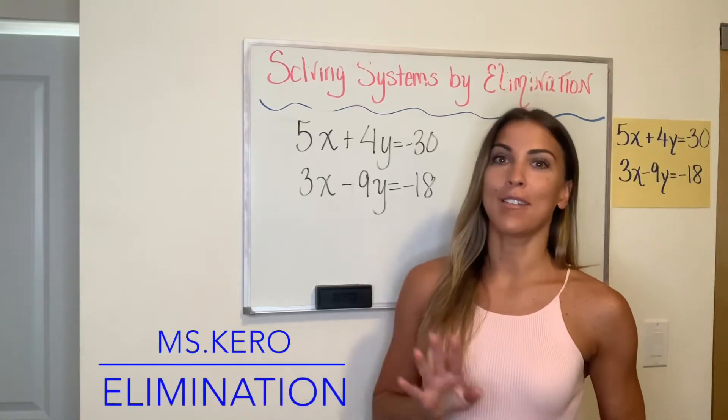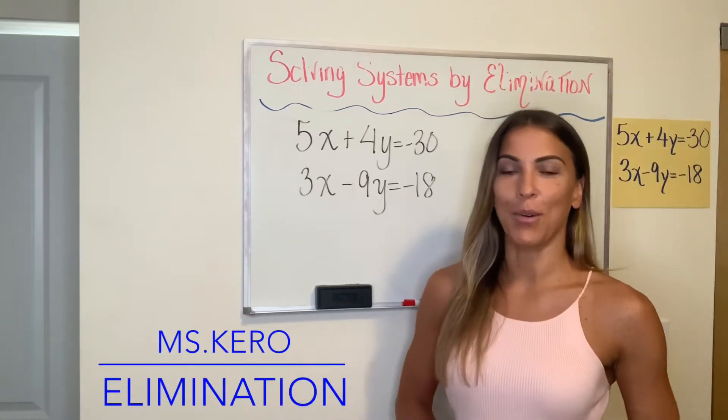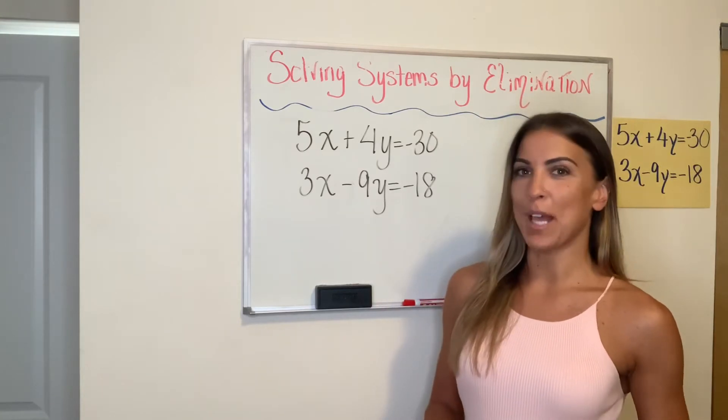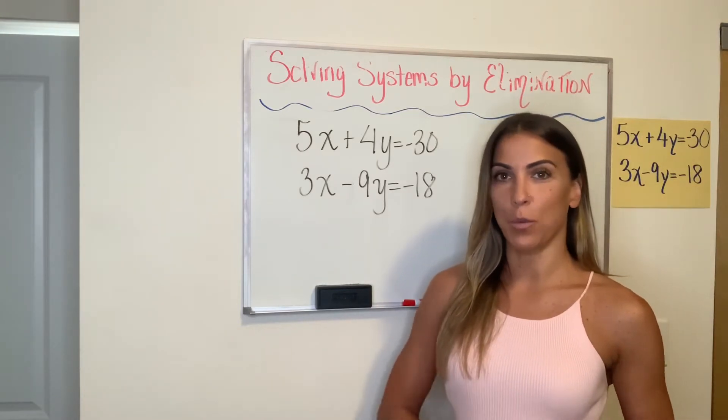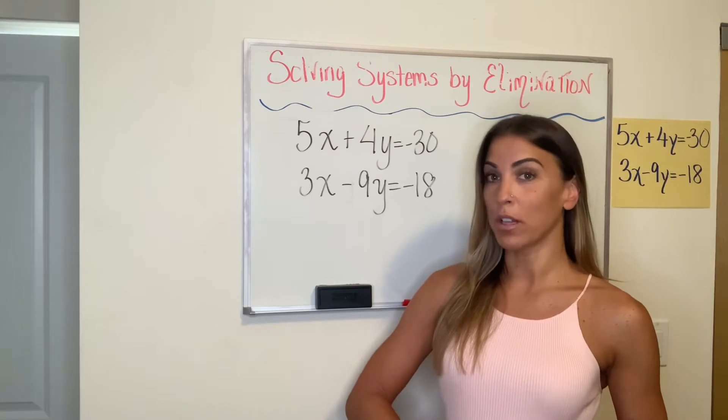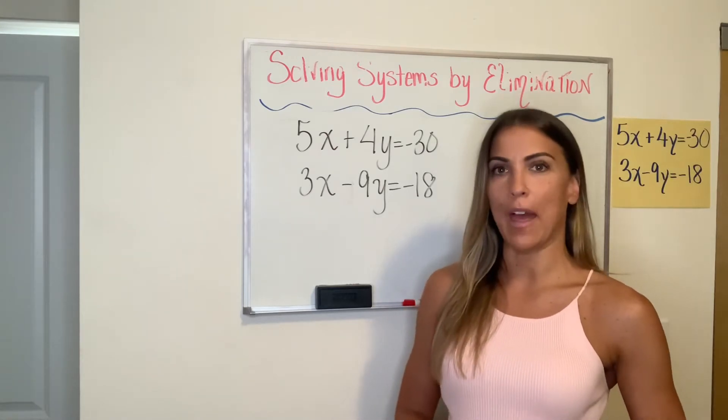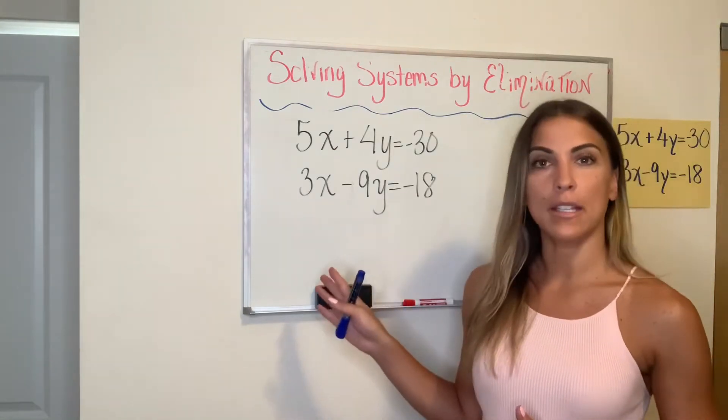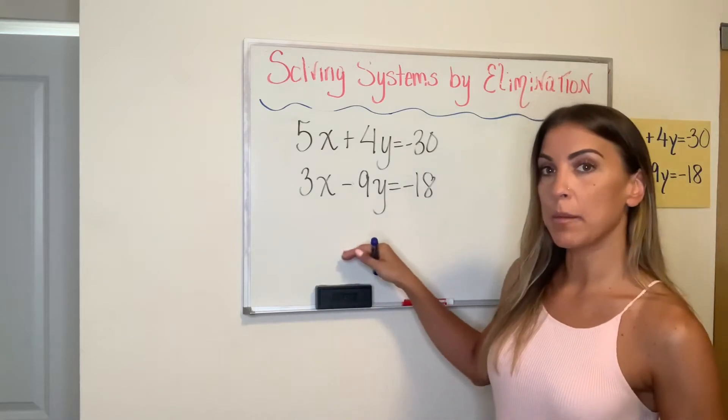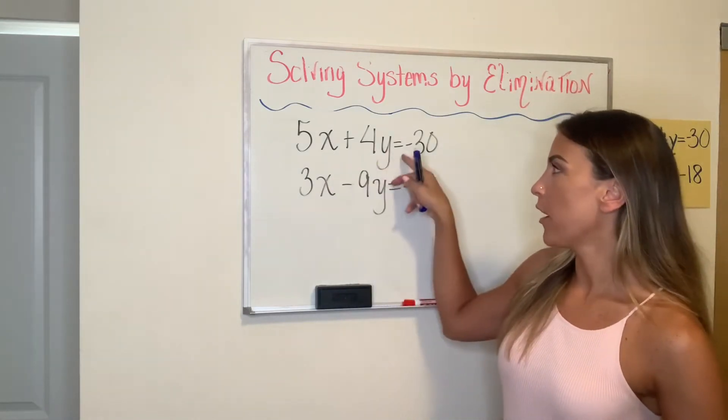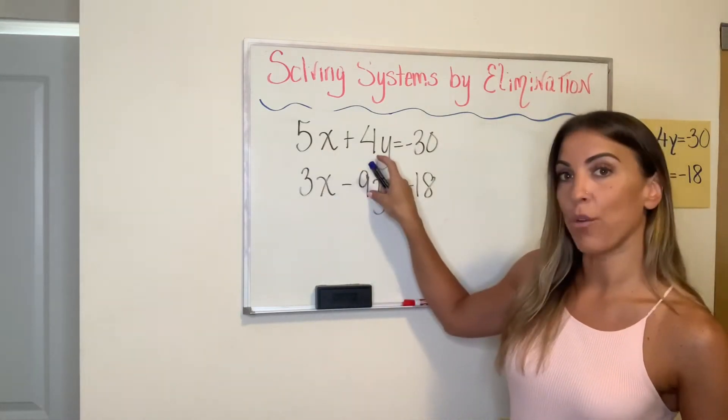Okay, video number four on solving systems by elimination. So this is when elimination gets the most complicated. If you have not watched videos one through three yet and you are struggling with elimination, I strongly suggest doing that because this is the most complicated scenario where we want to use elimination, but neither of the variables have the same or opposite coefficients.